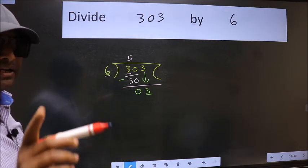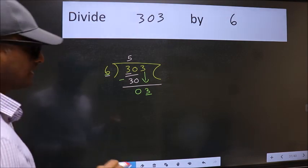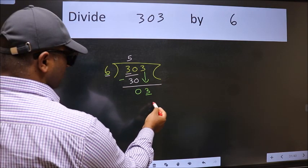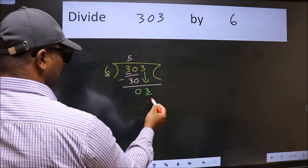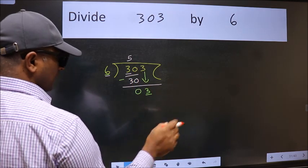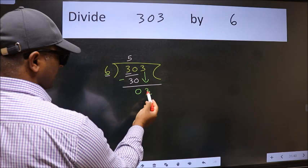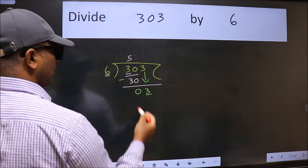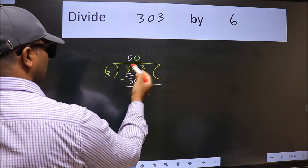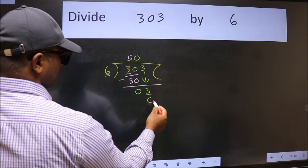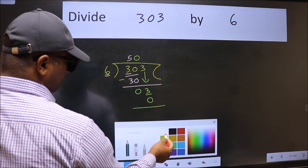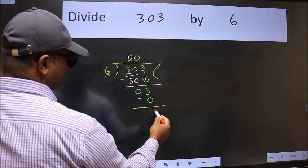Instead of that, what you should think of doing is which number should we take here? If I take 1, we will get 6, but 6 is larger than 3. So what we do is we take 0. So 6 into 0 is 0. Now we subtract. We get 3.